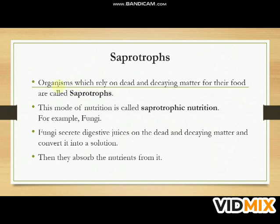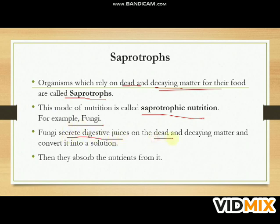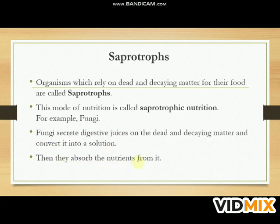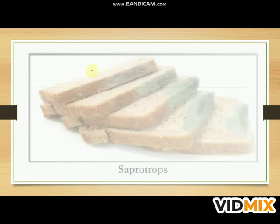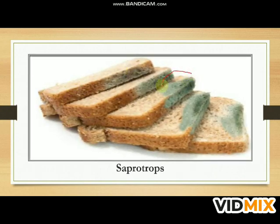Organisms which rely on dead and decaying matter for their food are called saprophytes. This mode of nutrition is called saprophytic nutrition. For example, fungi secrete digestive juices on the dead and decaying matter, convert it into a solution, and then absorb the nutrients from it. Generally, in the rainy and moist season, we can see the presence of fungus on a slice of bread.